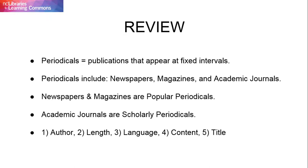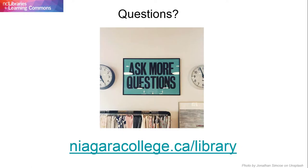You can tell if an article is popular or scholarly by examining the credentials of the article's author or authors, the length of the article, the language used within the article, the content of the article, and, finally, the title of the publication that the article is printed in.